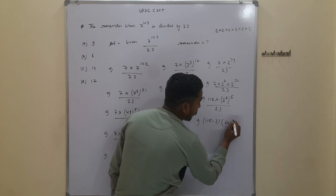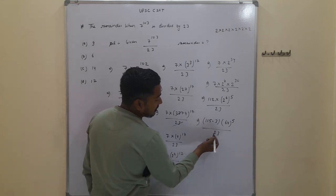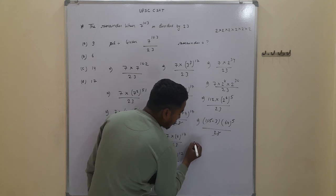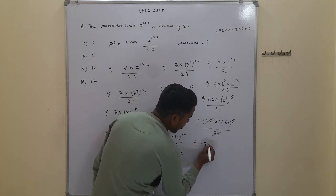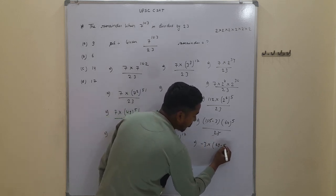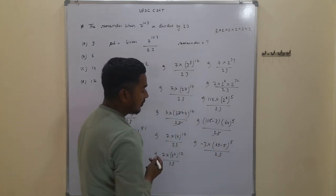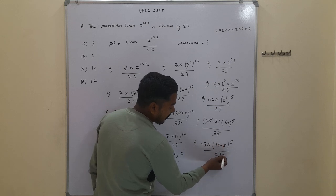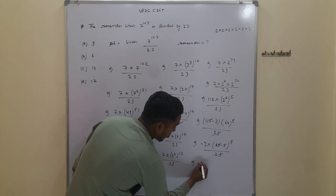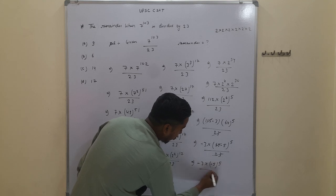This gives us 64 to the power of 5, upon 23. From here we can see 5 times 23 is 115, so that cancels with remainder 0. Then 64 is written as 69 minus 5, so we have minus 3 into (69 - 5) to the power of 5, upon 23. Since 3 times 23 is 69, that cancels with remainder 0. So we have minus 3 into minus 5 to the power of 5, upon 23.